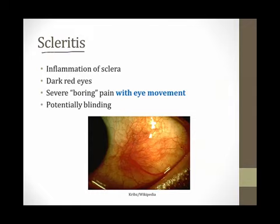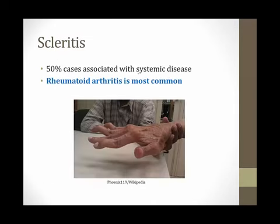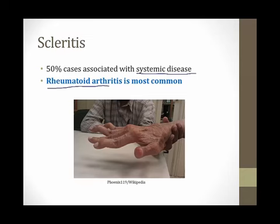Scleritis is inflammation of the sclera. Patients develop dark red eyes — it's one of many causes of the red eye. Patients also have severe boring pain, especially with eye movement. The reason scleritis makes it so painful to move your eyes is because the extraocular muscles insert into the sclera. This is a very serious cause of the red eye and can potentially be a blinding disorder. 50% of cases of scleritis are associated with a systemic disease, and rheumatoid arthritis is the most common association — easy to remember because RA affects connective tissue and the sclera is the connective tissue of the eye.